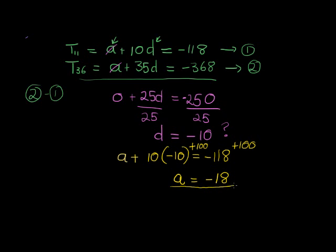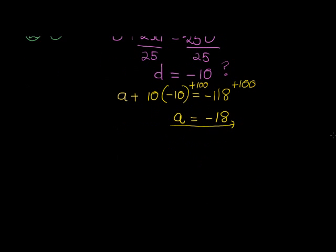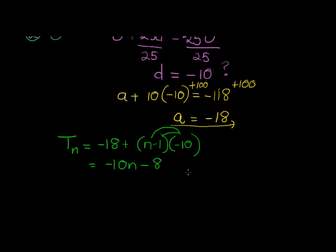There we go. We found our parameters of our general term. So what is our general term? Our general term, Tn, is my first term, negative 18, plus n minus 1 times my constant difference, which is negative 10. You don't need to simplify it, but you can if you want to, and that would give us negative 10n plus 10 minus 18 gives me negative 8.